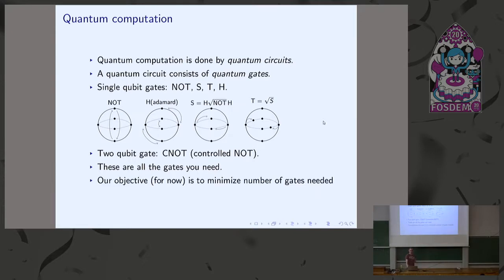The motivation behind this talk is quantum circuit optimization: taking the same quantum circuit but reducing the number of gates in it while still performing the same computation. This is analogous to what advanced compilers do for classical computers, but now we want to do it for a quantum computer.